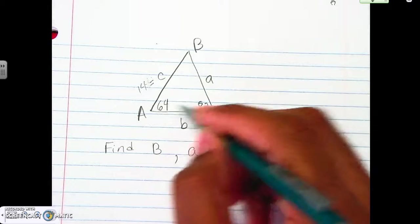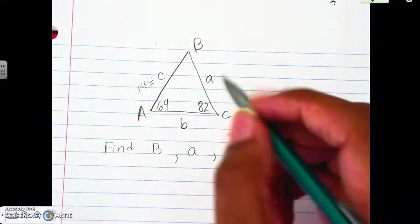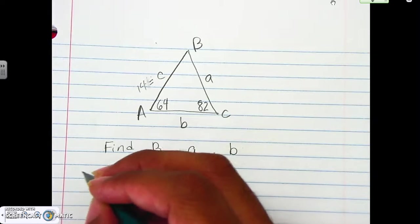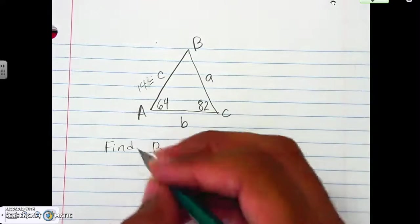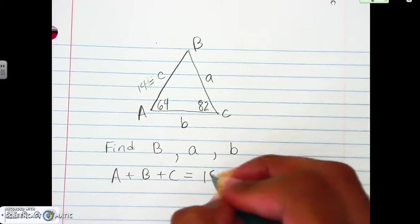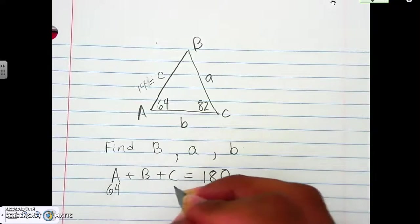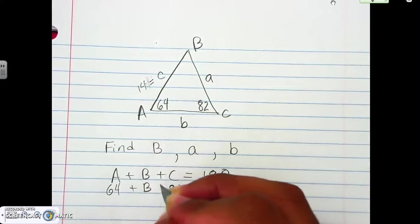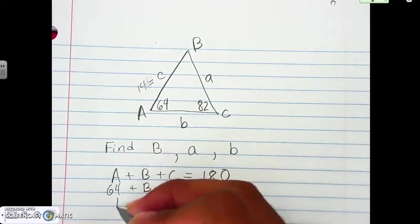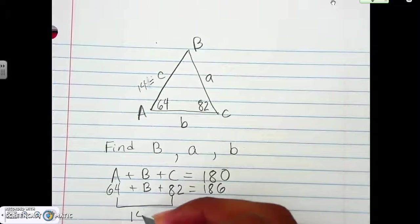All right, so again, here we have A and C, and we need angle B. That's always the first thing. So find all three angles, and that's what we said on the side over there by the triangle. Find all three angles first. So we know A plus B plus C equals 180. So A is 46, C is 82, and B we don't know. So if we were to add those three pieces together, these two here,